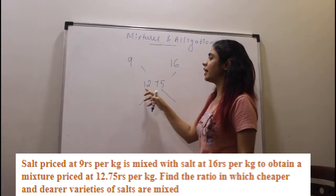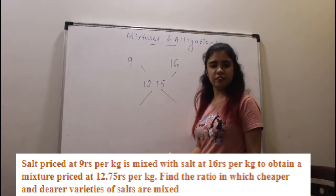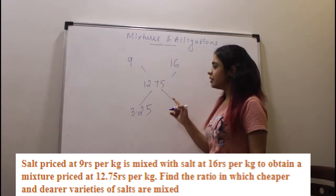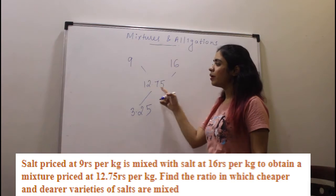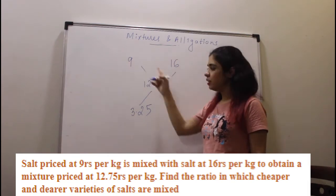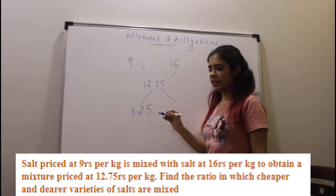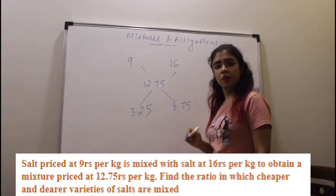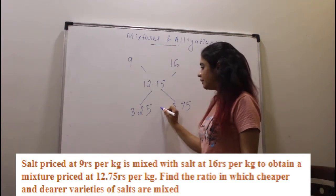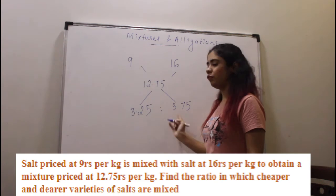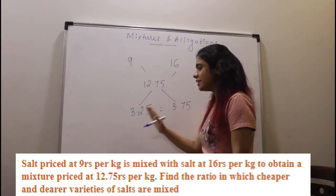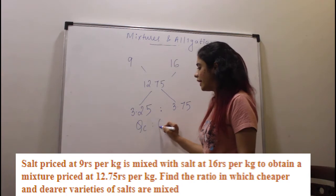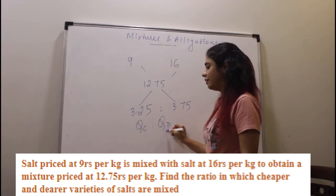So this will be 16 minus 12.75, which becomes 3.25. This will be 12.75 minus 9, which gives you 3.75. I'll take the ratio of these two — so this is the ratio in which you're going to mix your cheaper quantity and dearer quantity.